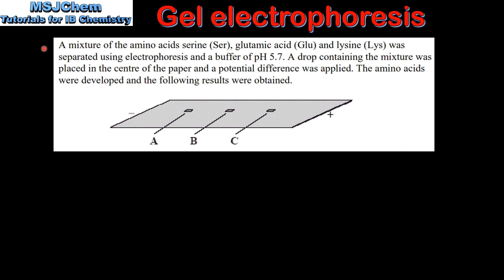Next we look at an example. A mixture of the amino acids serine, glutamic acid and lysine was separated using electrophoresis and a buffer of pH 5.7. A drop containing the mixture was placed in the center of the paper and a potential difference was applied. The amino acids were developed and the following results were obtained. In this diagram, on the left we have the negative electrode and on the right we have the positive electrode.